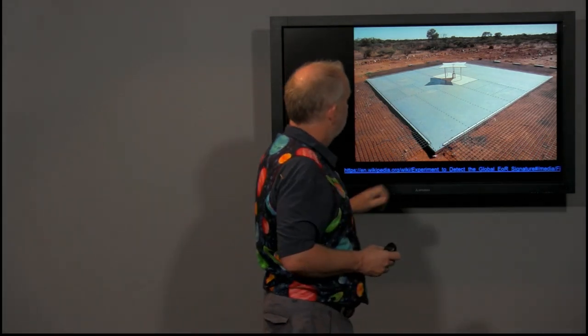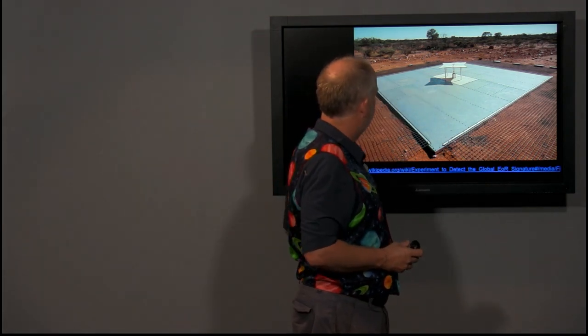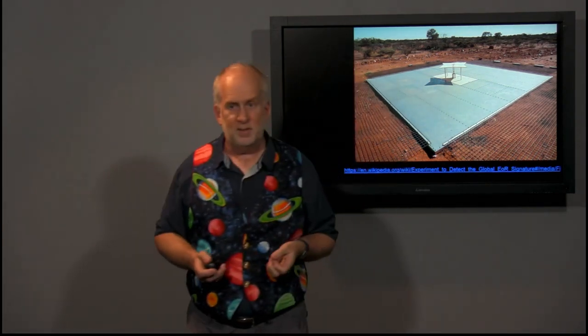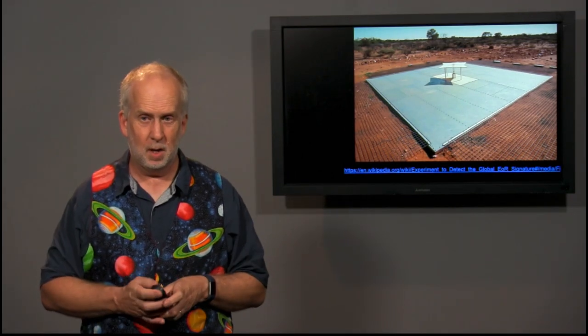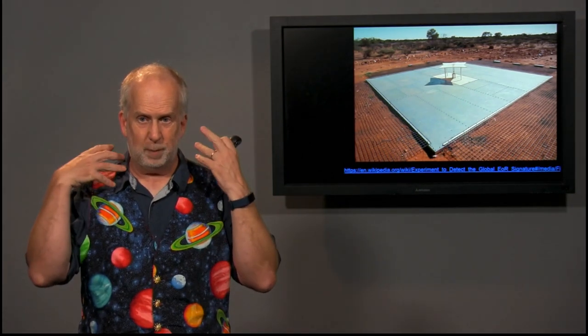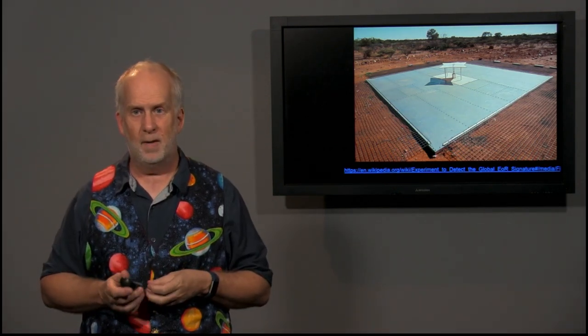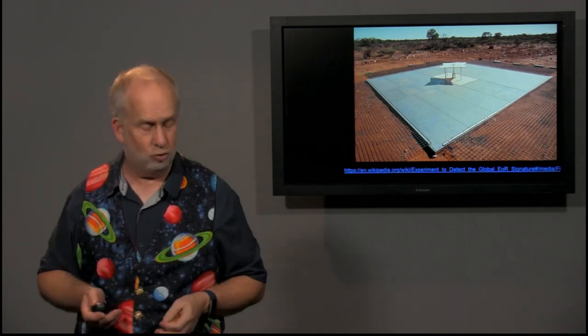But basically it's listening to everything above it. It's got a big ground plane, some complicated electronics in the middle. It's a fairly simple looking device, though the electronics is anything but simple. And it measures the spectrum of how much intensity of radio is coming in at a whole bunch of wavelengths over the possible wavelengths of interest.